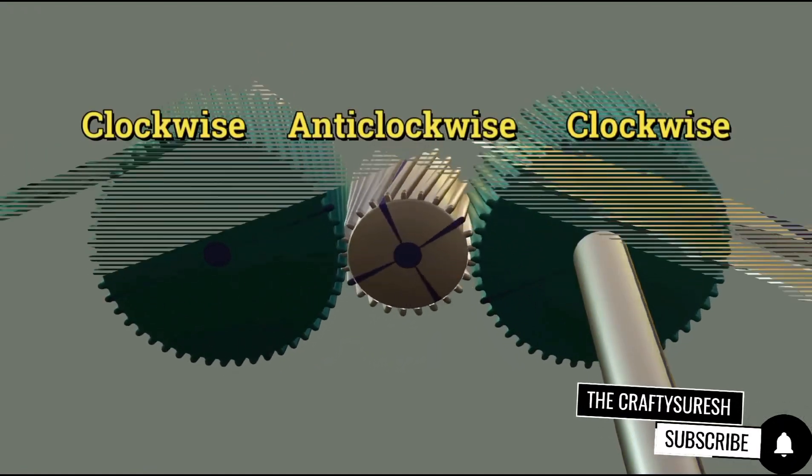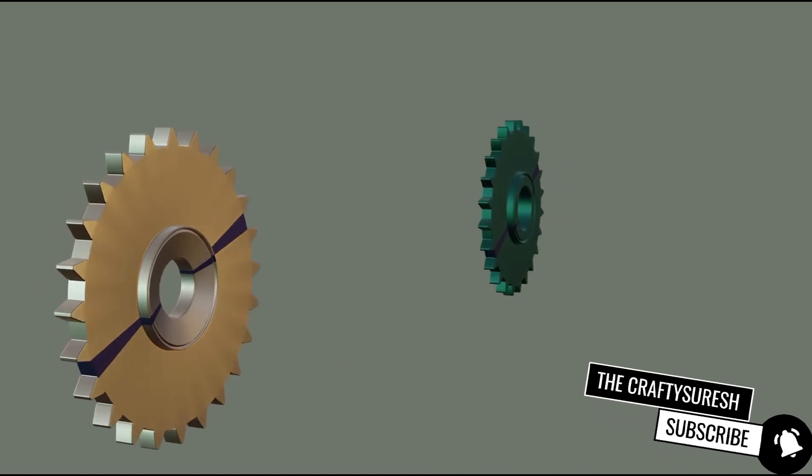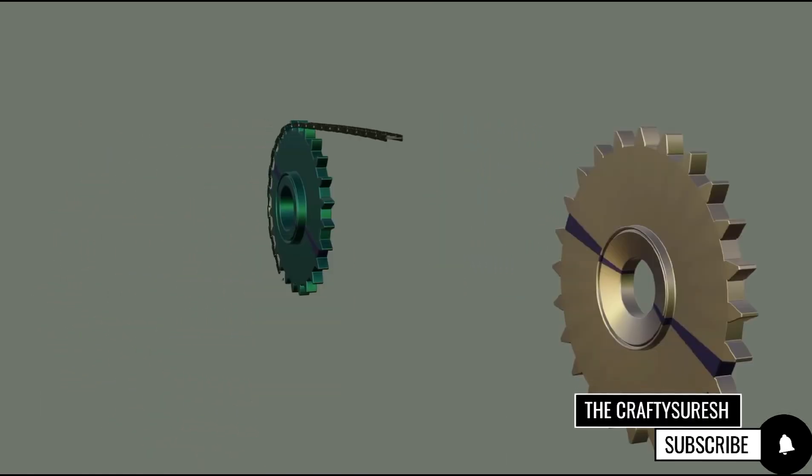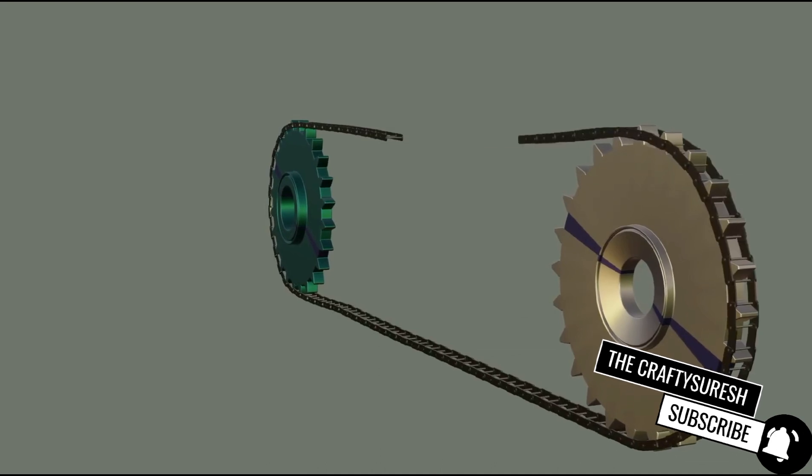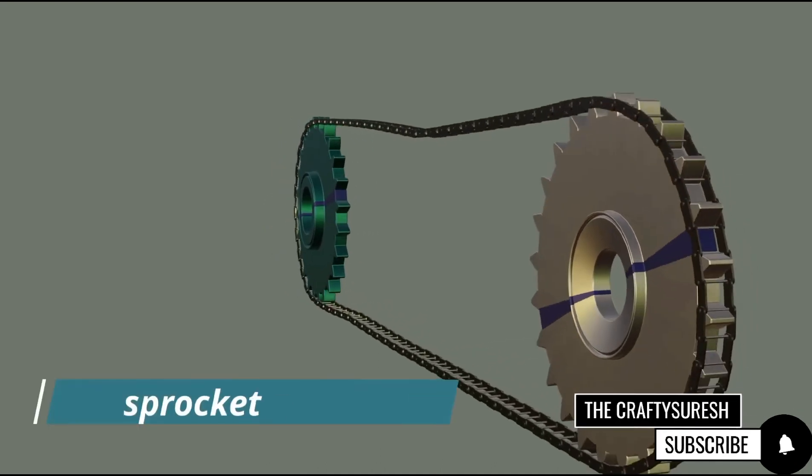But if the distance between the gears is too much, then we use the third method of power transmission in which the chain system is used between the gears. And the gears here are called sprocket gears.